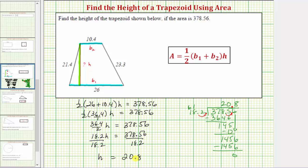Therefore h equals 20.8, which means the height of the trapezoid equals 20.8 units.